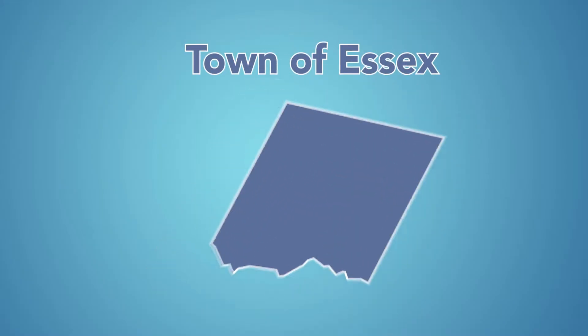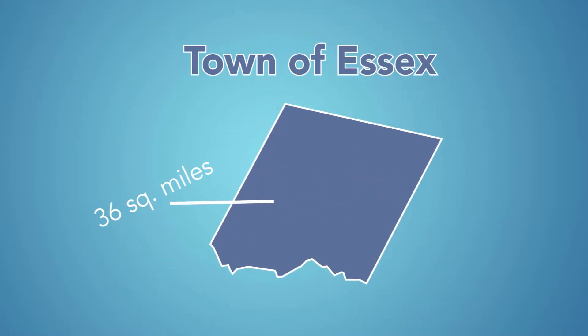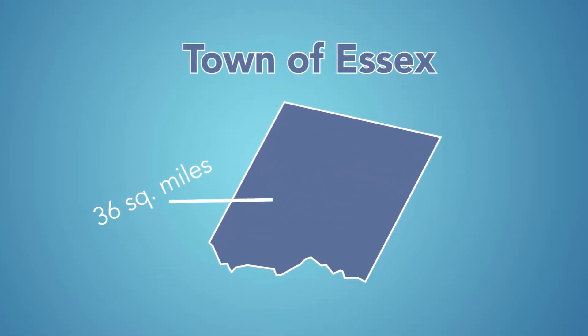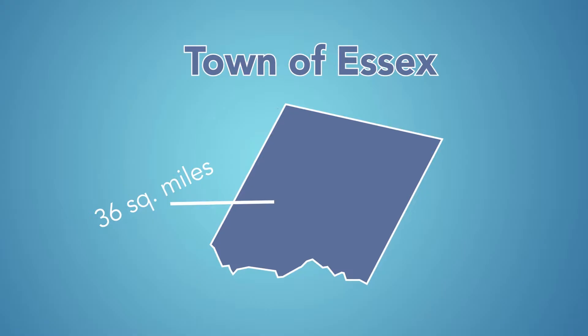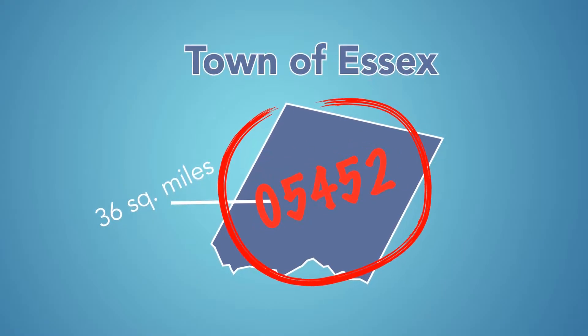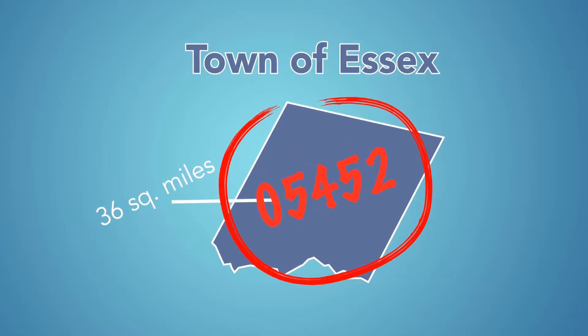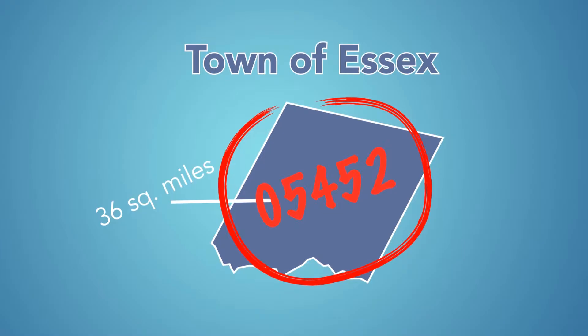The town of Essex is a 36-square-mile municipality in Chittenden County, Vermont. The U.S. Postal Service refers to this area as Essex Junction, with a zip code of 05452, which can often be confusing.